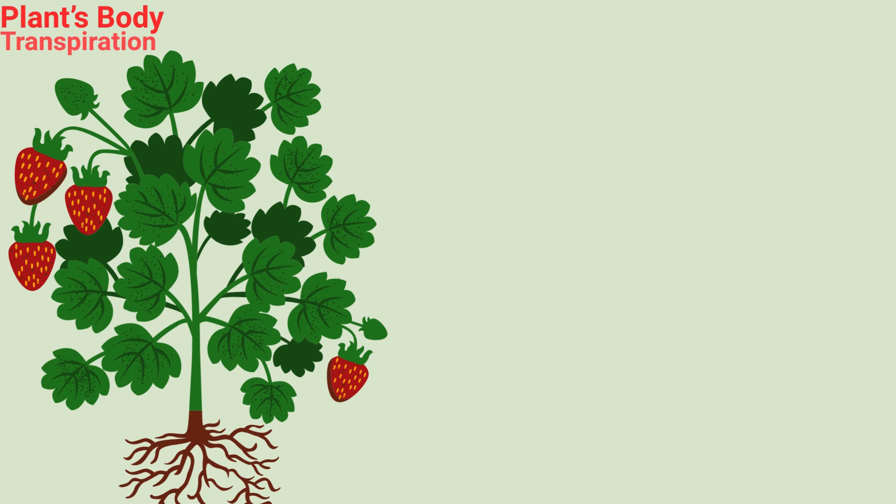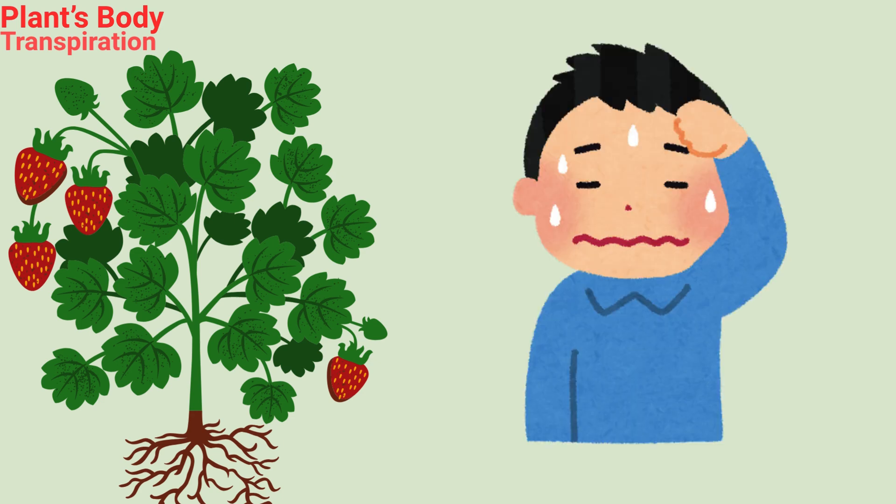Transpiration. The plants sweat. Just like we sweat when it's hot, plants let out water through tiny holes in their leaves. This is called transpiration. It helps the plants stay cool and pull more water up from the roots.